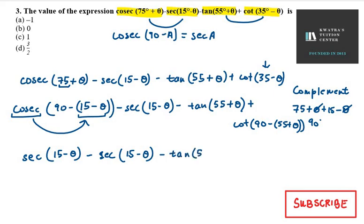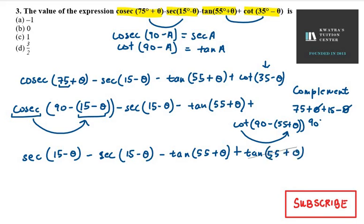Then we have tan(55 + θ) as it is. Now, cot(90 - A) can be written as tan(A). So what will our angle be? Tan(55 + θ). Now you can clearly see that first and second gets cancelled out, and third and fourth gets cancelled out. So your resultant will be 0.